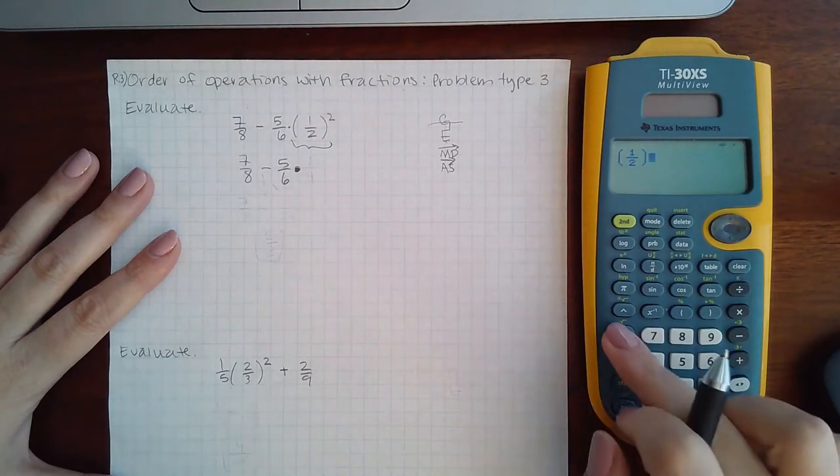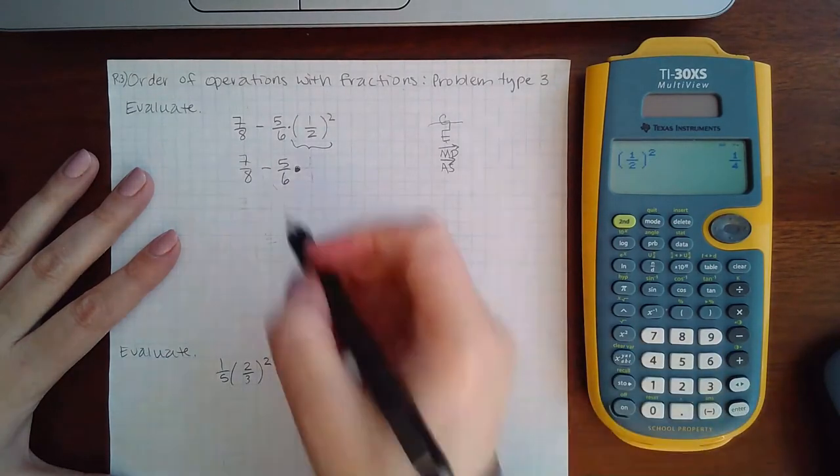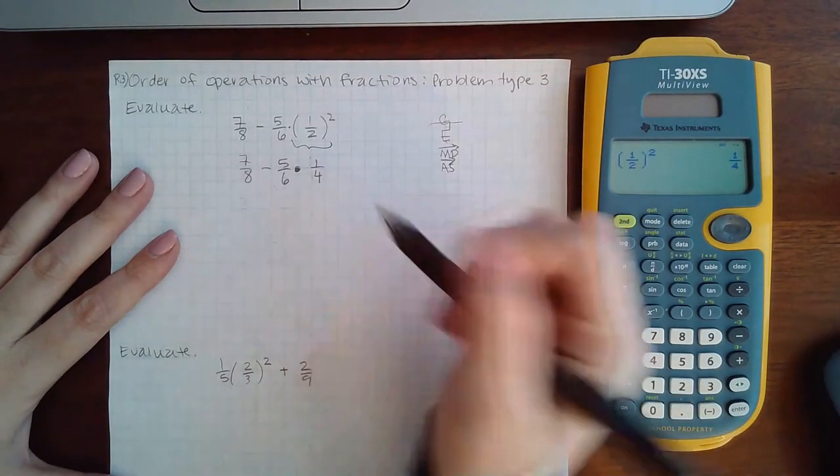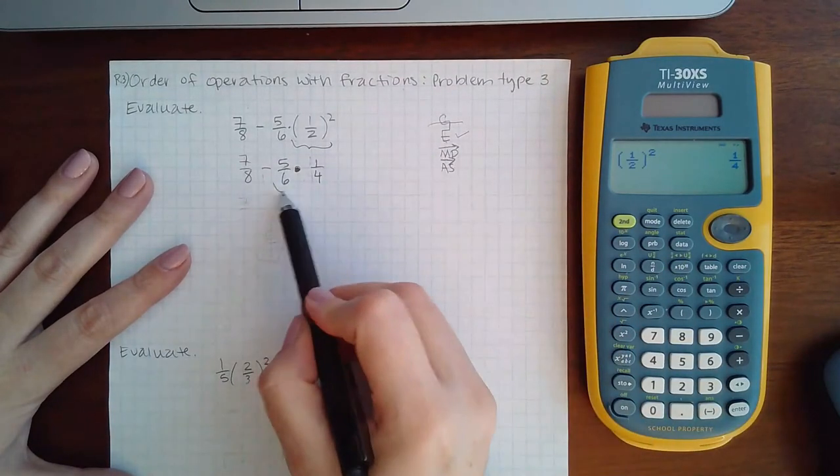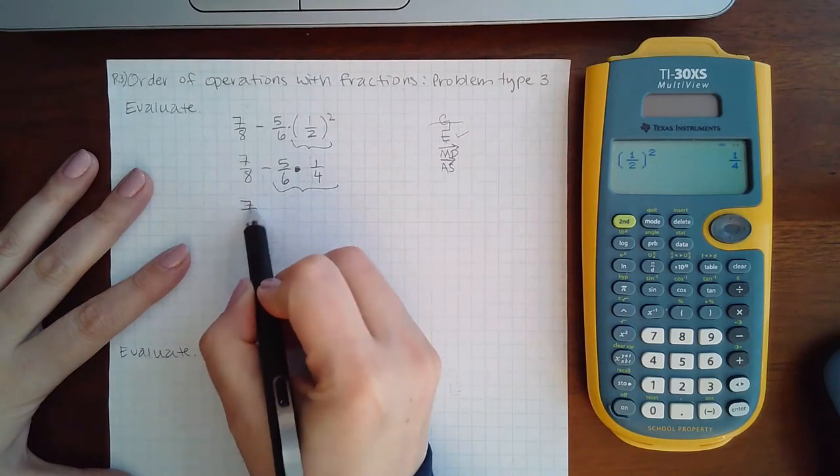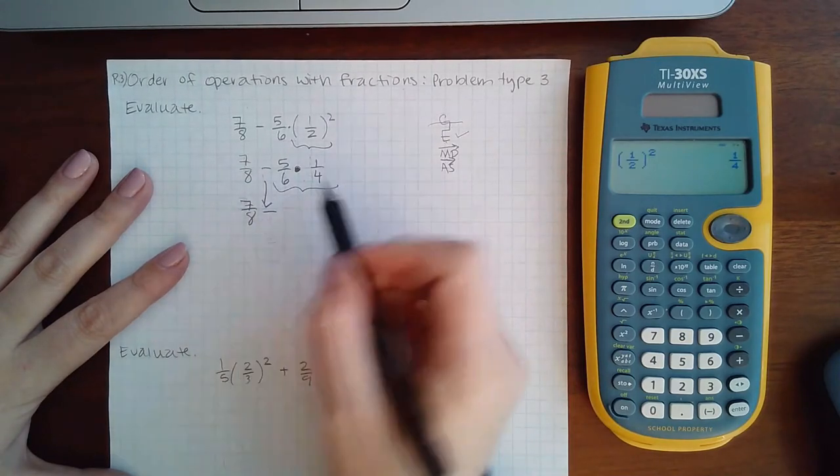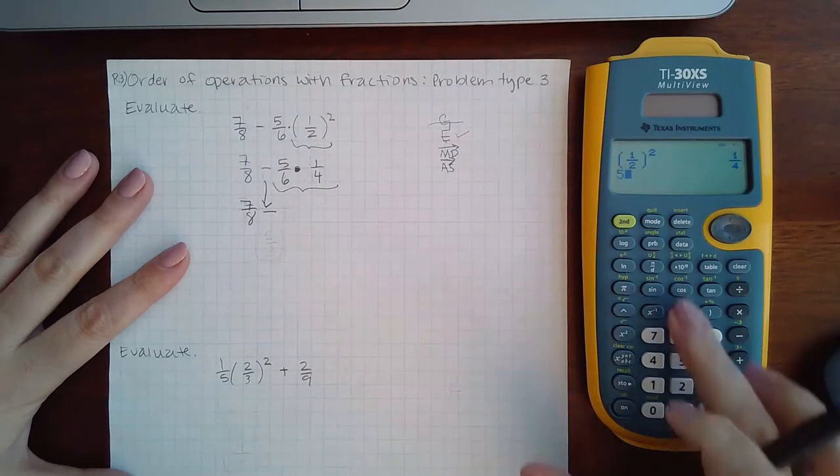Then hit your square and we get one fourth. Now the next thing after evaluating is to do multiplying and dividing. So we have seven eighths, I'm going to bring down my minus nine and five over six.